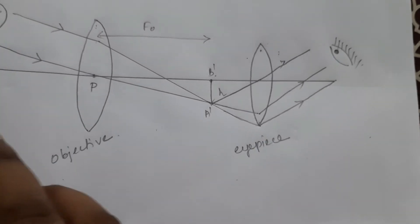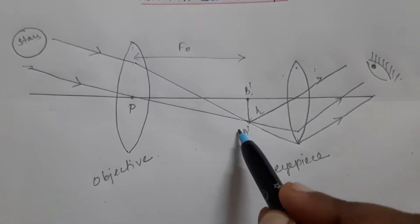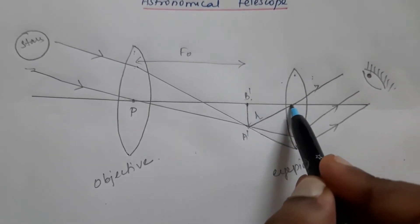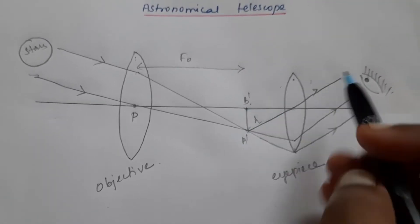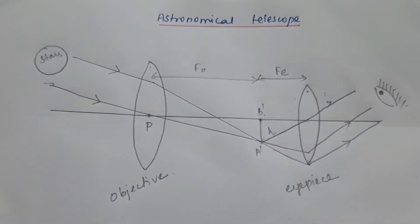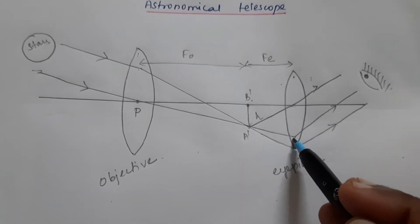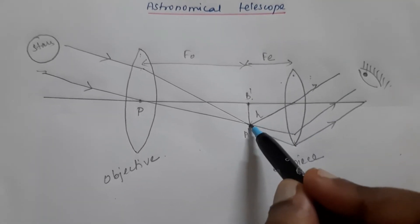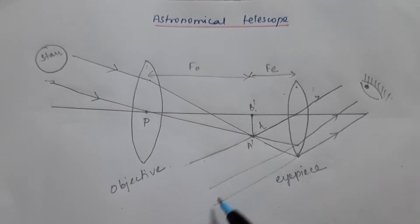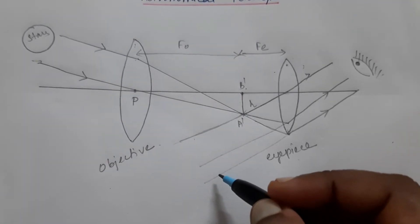When light from the distant object enters the objective, you get a real image formed there. This point is also the focal point of the eyepiece, and this distance is the focal length of the eyepiece, F_E. The eyepiece magnifies this image, producing a final inverted image. Extending these rays, they go parallel and you obtain an image at infinity.